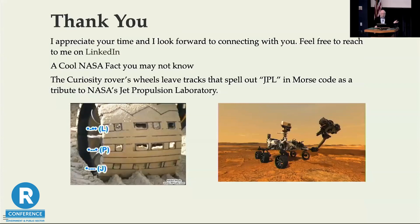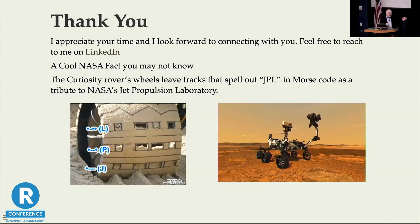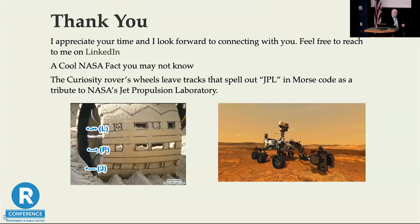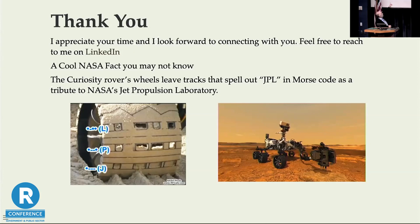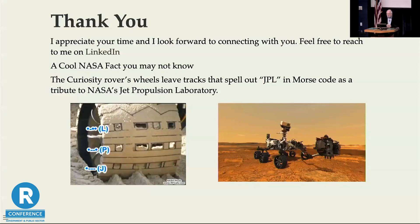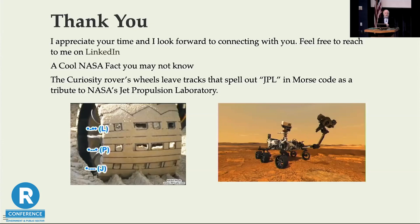I look forward to connecting with any of you — feel free to reach out on LinkedIn. But I want to leave you with one cool fact. Several years ago I was at JPL before Curiosity landed on Mars, talking to some of the rover developers. They told me they had asked NASA management if they could put a JPL logo on the rover, and management said no — nothing but a NASA sticker. So the engineers, being engineers, decided on one of the wheels to encode in Morse code a J, a P, and an L. So every time Curiosity rolls on the Martian surface, it leaves JPL in Morse code in the dirt. Kudos to them for that ingenuity. Thank you, I appreciate your time.